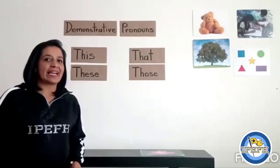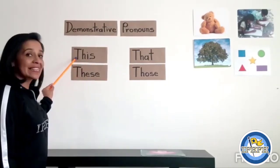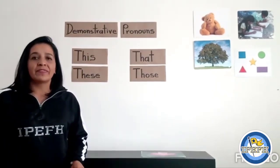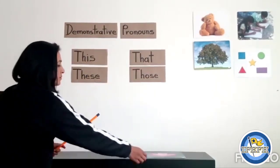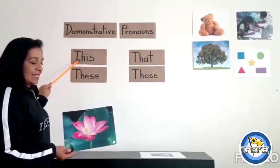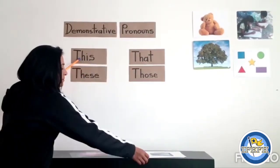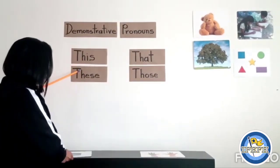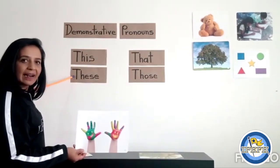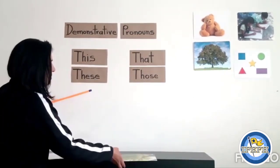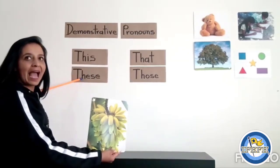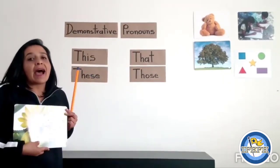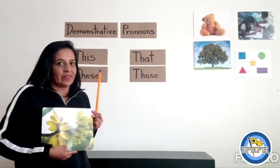Okay boys and girls, very good. Pay attention. We are going to use 'this' and 'these' to point things or people that are close to the speaker. For example: this is a flower, this is a TV, these are hands, these are bananas. These pictures are near to me.